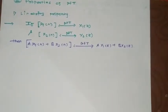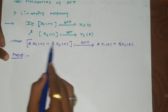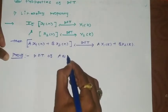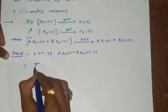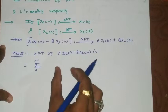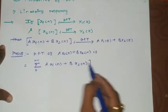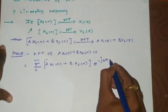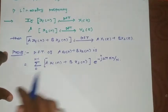To prove this, we start with the proof. We find the DFT of the combination ax1(n) + bx2(n). Using the standard DFT formula, this is equal to the summation from 0 to N-1 of the entire function ax1(n) + bx2(n), multiplied by the exponential term e^(-j2πkn/N).